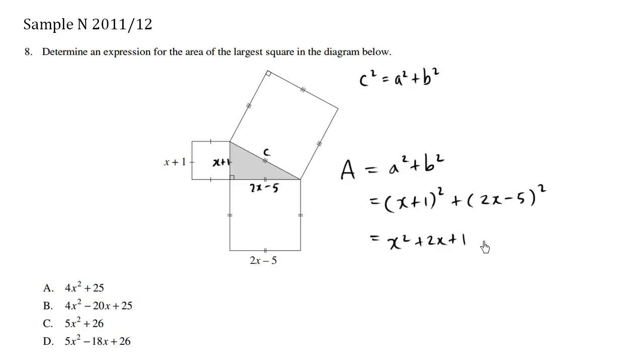Plus 2x times 2x is 4x squared. 2x times negative 5 is negative 10, and we double it, so this is negative 20x. And negative 5 squared is positive 25.